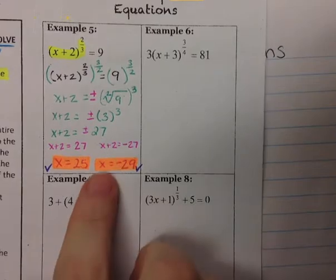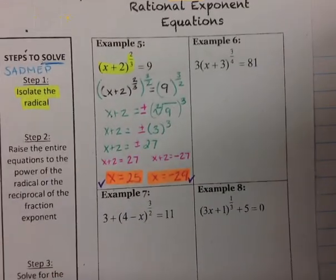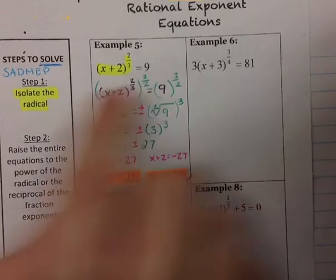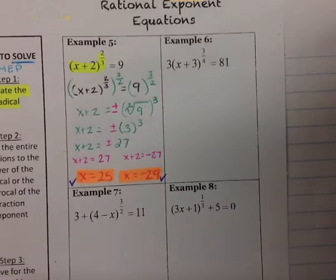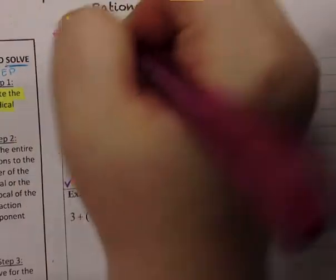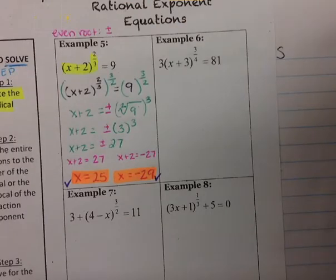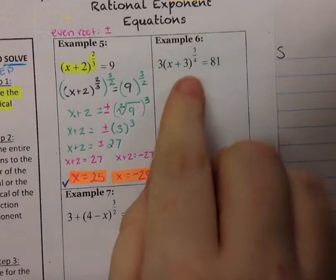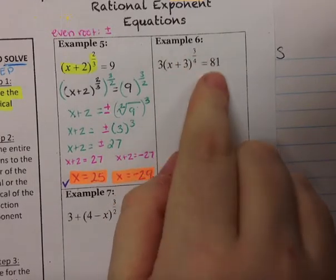This plus or minus happens when you have an even denominator in your reciprocal — that is, when you take an even root, you have to put the plus or minus.